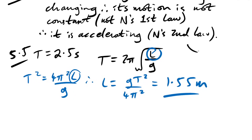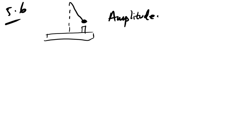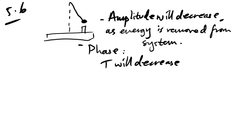Question 5.6: air resistance affects the pendulum's motion. The amplitude will decrease as energy is removed from the system. The time period will also decrease slightly because the pendulum doesn't travel as far — equivalently, the frequency will increase a little.